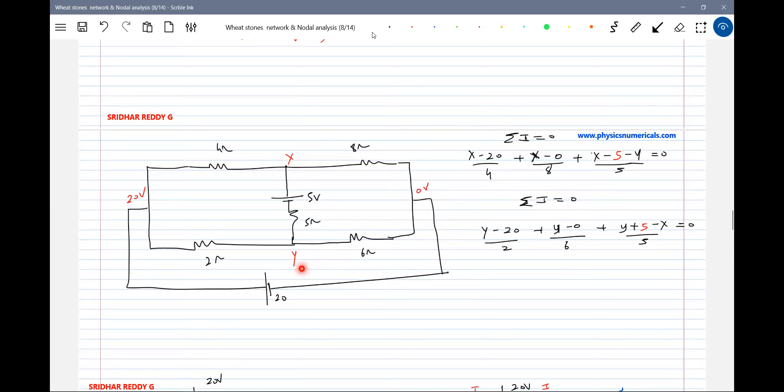Then by algebra, sum of current entering a junction should be zero. Therefore, X minus 20 by 4, X minus 0 by 8, X minus 5 minus Y by 5 ohm. How are we writing this?